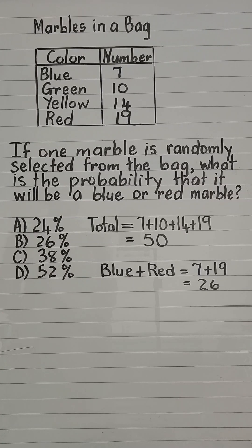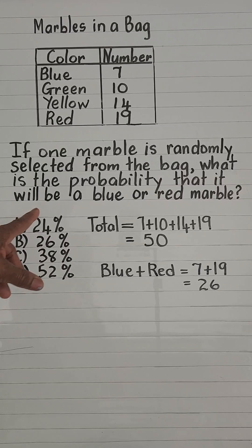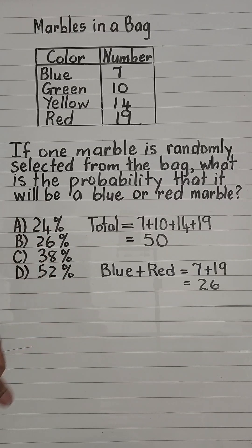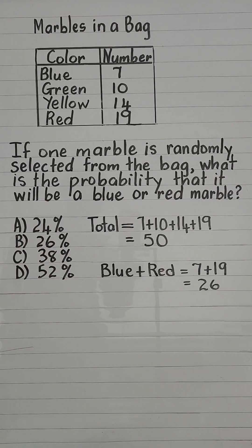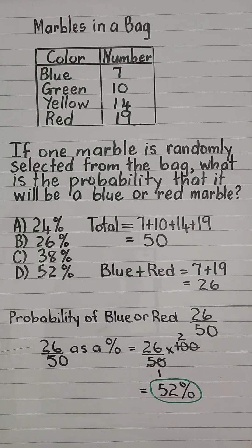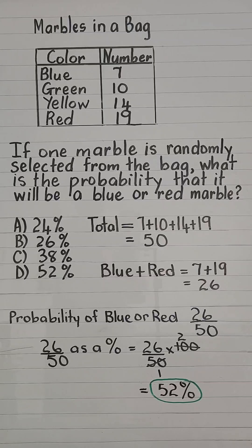red or a blue is 26 out of 50. However, they want us to express that as a percentage. 26 over 50 as a percent is equal to 52 percent, and the correct choice is D.